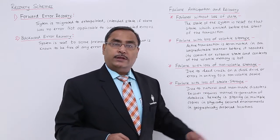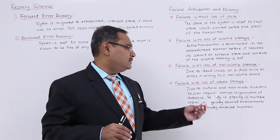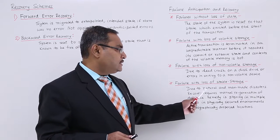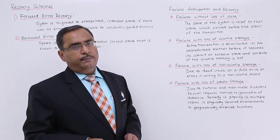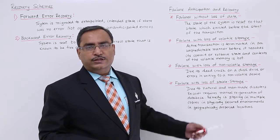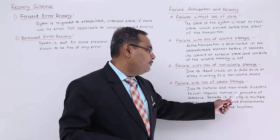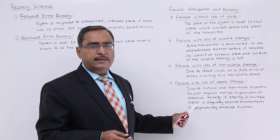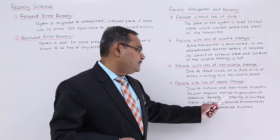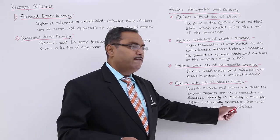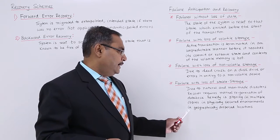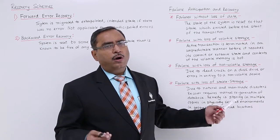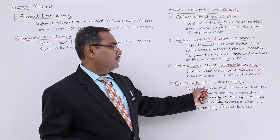Failure with loss of stable storage. In the previous video, we have discussed what is a particular stable storage, but there also the data might be lost. But my question is coming, why? Due to natural and manmade disasters. Due to the natural and manmade disasters, the loss of stable storage may take place. Recover requires manual regeneration of the database. Manual regeneration of the database, we know that it is very laborious, tedious, time consuming, but there is no other way. Remedy is storing in multiple copies in physically secured environments and in geographically dispersed locations so that we can save our data from the natural disasters or manmade disasters. This is my failure with loss of stable storage.